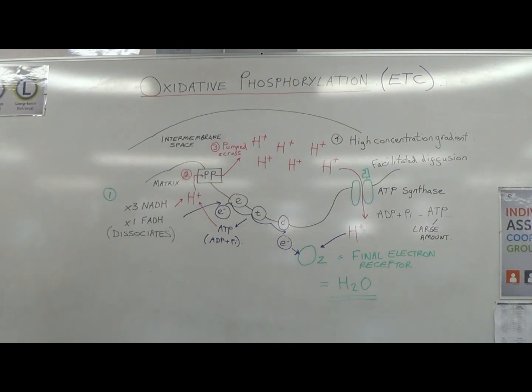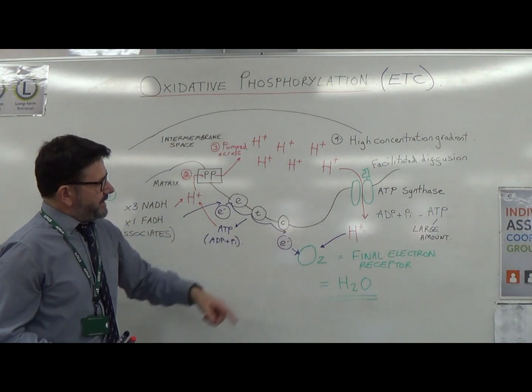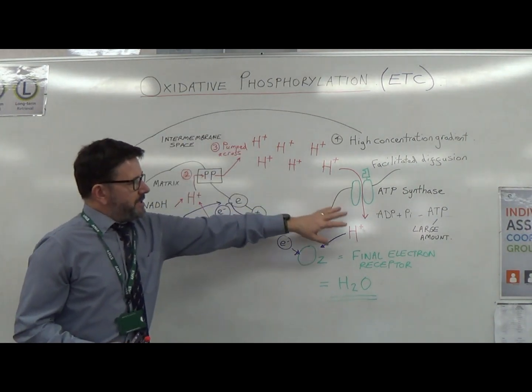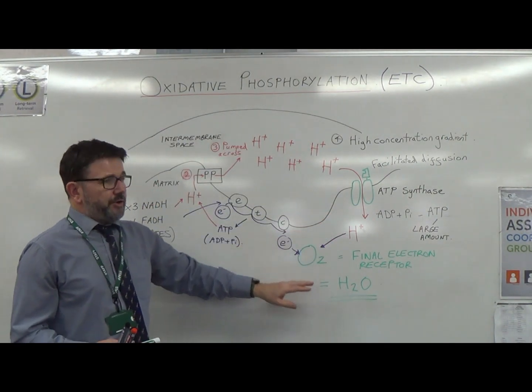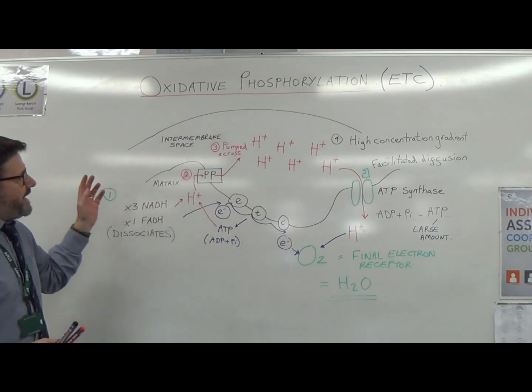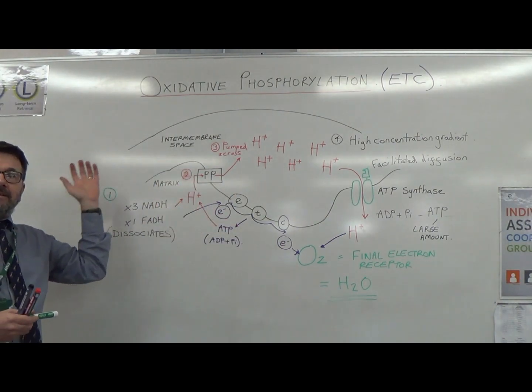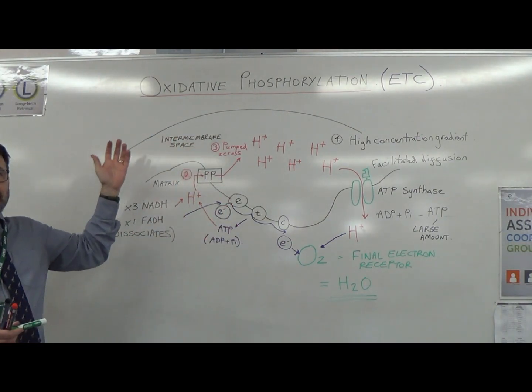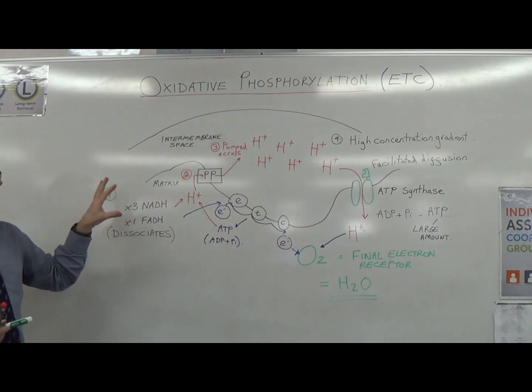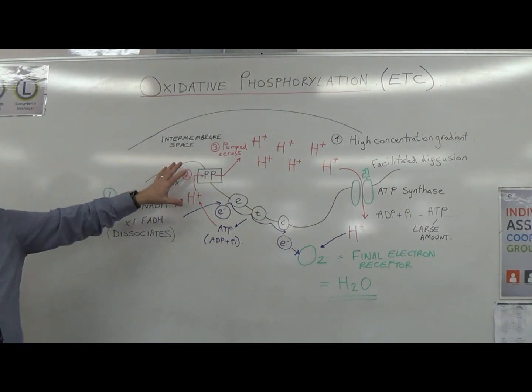Oxygen is the final electron receptor at the end of the ETC. It takes the hydrogen and the electron away through water, thus maintaining the concentration gradients.